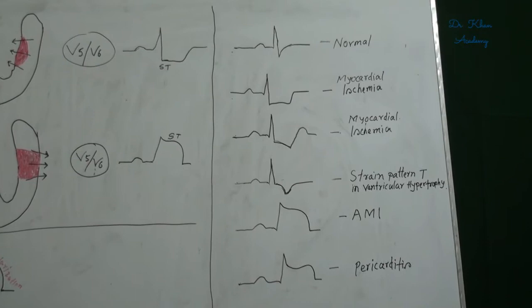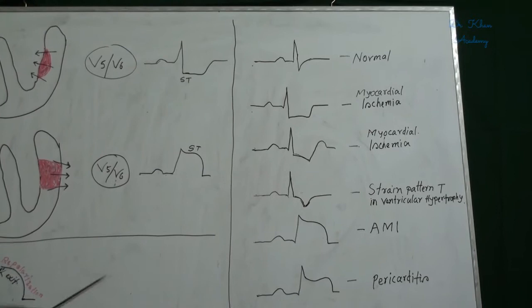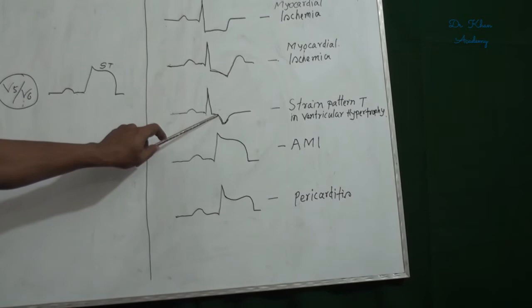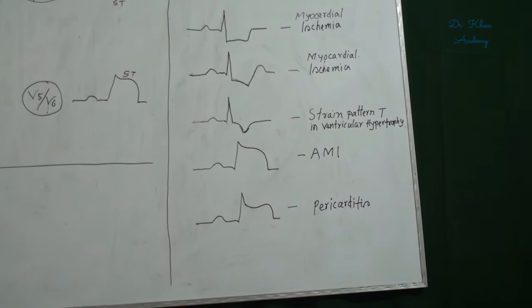Fourth figure shows ST segment depressions with T inversions. And in these ST segment depressions convexity faces upwards. This T inversion is called a strain pattern T, which is found in ventricular hypertrophy.